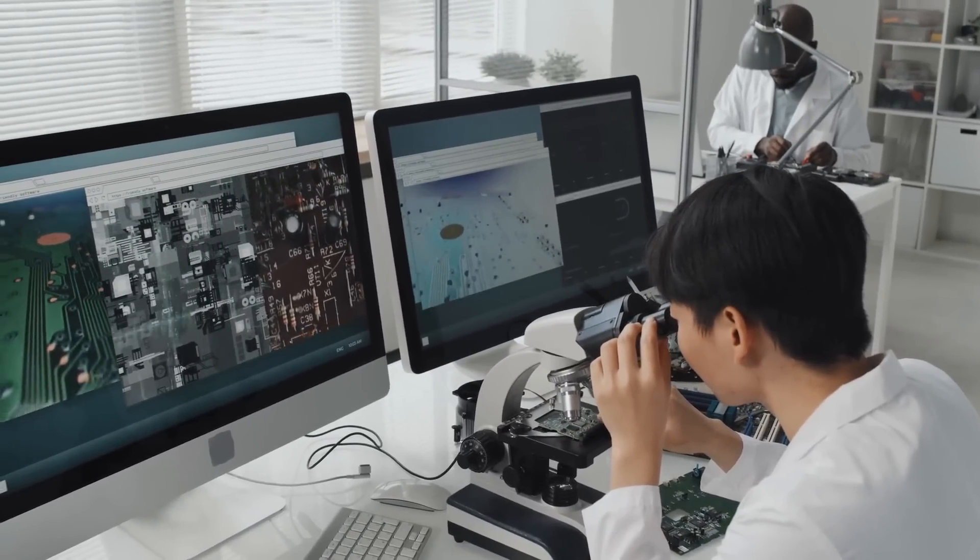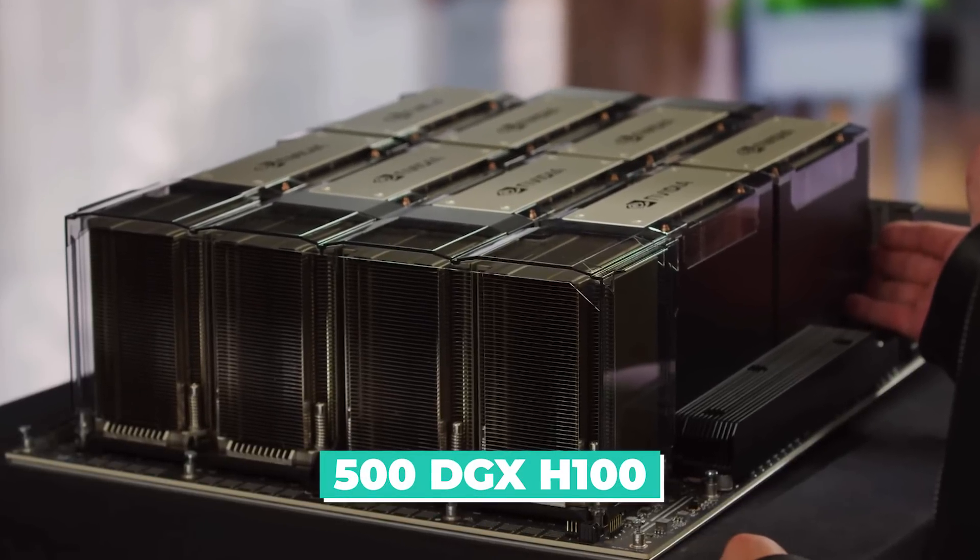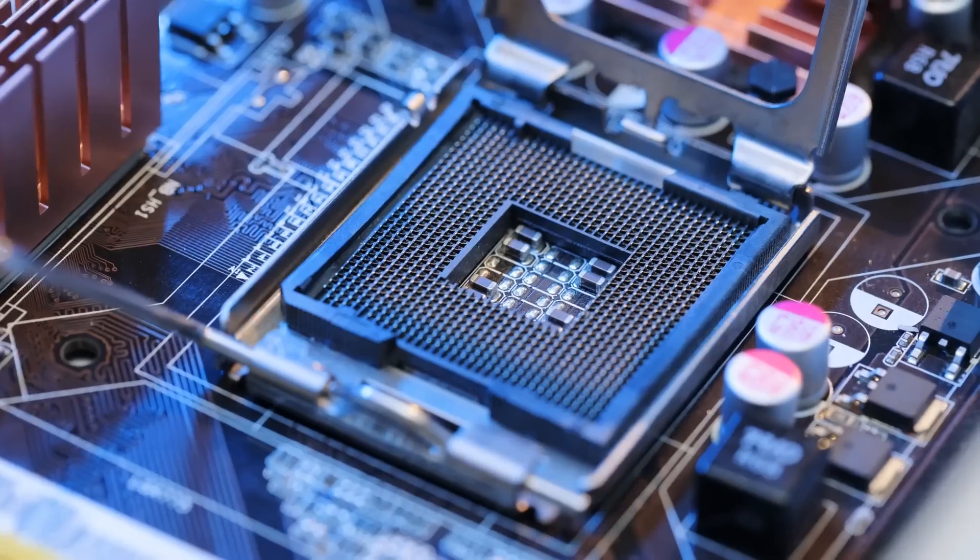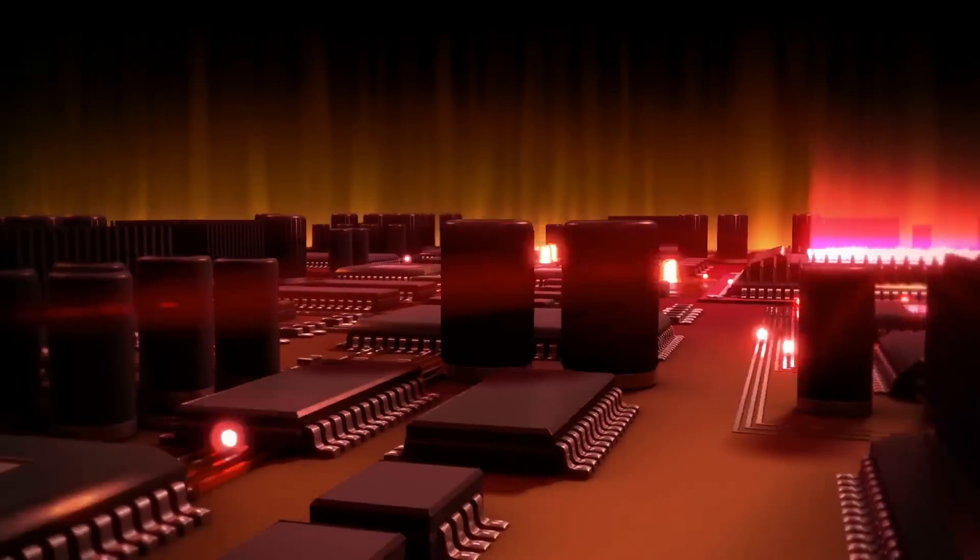This allows TSMC to use fewer server CPUs and instead rely on just 500 DGX H100 systems or around 4000 GPUs. This change reduces power consumption by a significant amount, which means they can reduce their carbon footprint and save on energy costs.